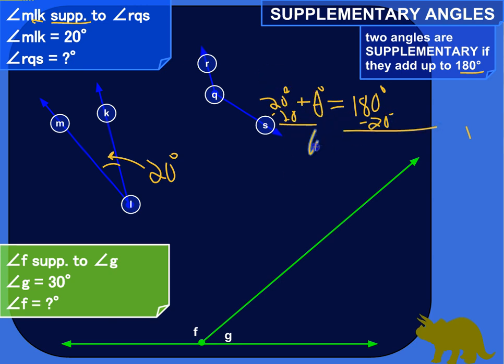This side of the equation is just theta. And then 180 minus 20 is 160. So angle RQS is equal to 160 degrees. Mystery solved.